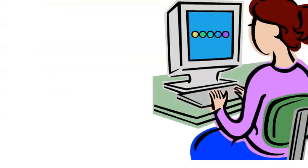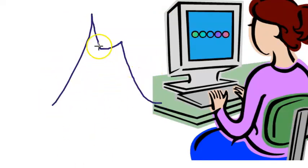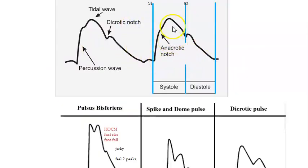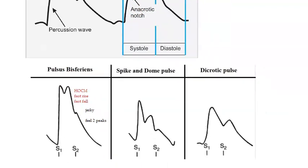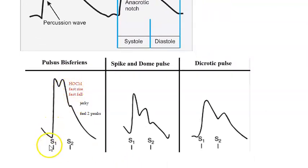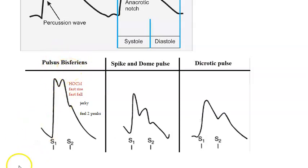Regarding the pulse: there is a fast rise and a fast fall, giving a jerky pulse with a double-peak pattern. This is called pulsus bisferiens. This bisferiens pulse is characteristic of HOCM.